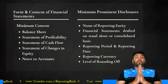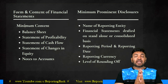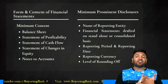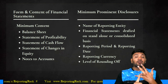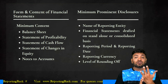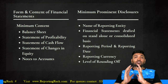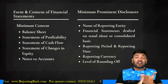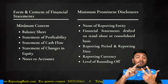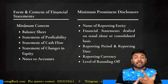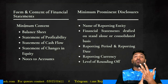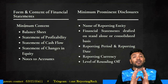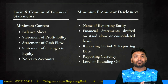To summarize: the minimum statements to be presented as part of financial statements are the balance sheet, statement of profitability, statement of cash flows, statement of changes in equity, and notes to accounts. The five prominent disclosures to be presented on the face of the financial statements are: name of the reporting enterprise, whether standalone or consolidated, reporting date and period, reporting currency, and level of rounding off.